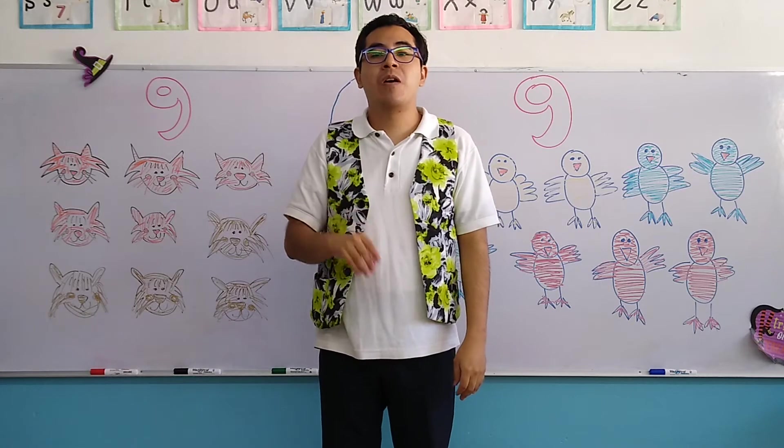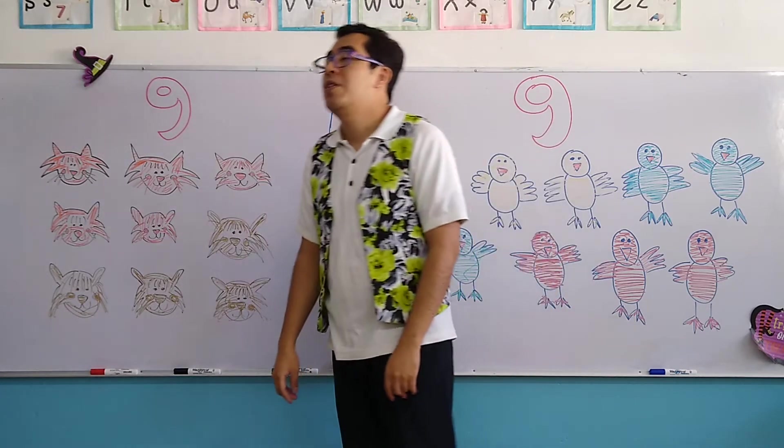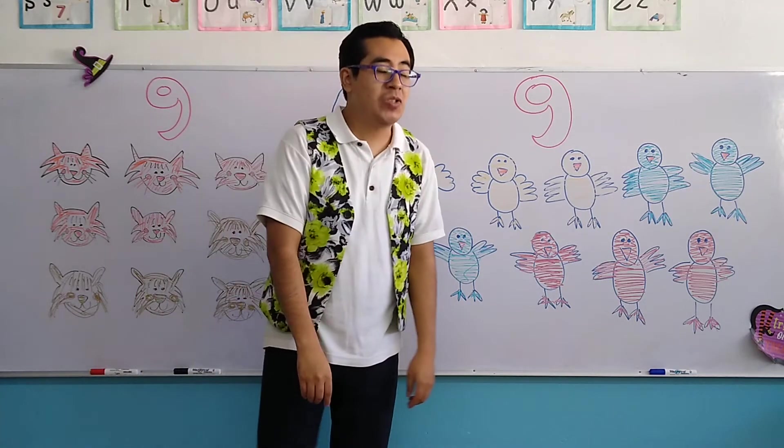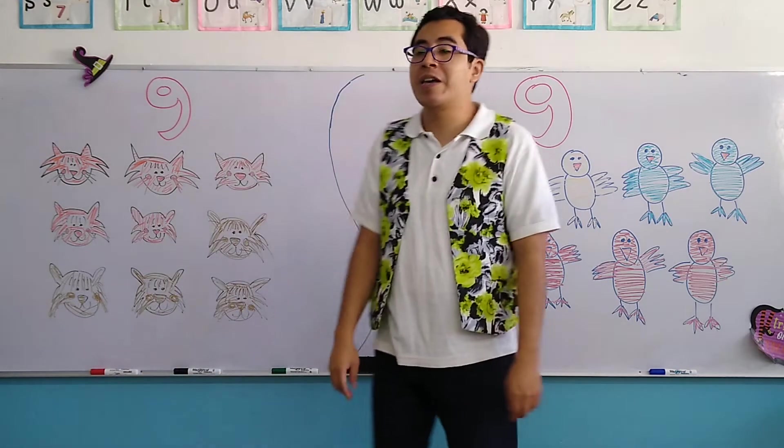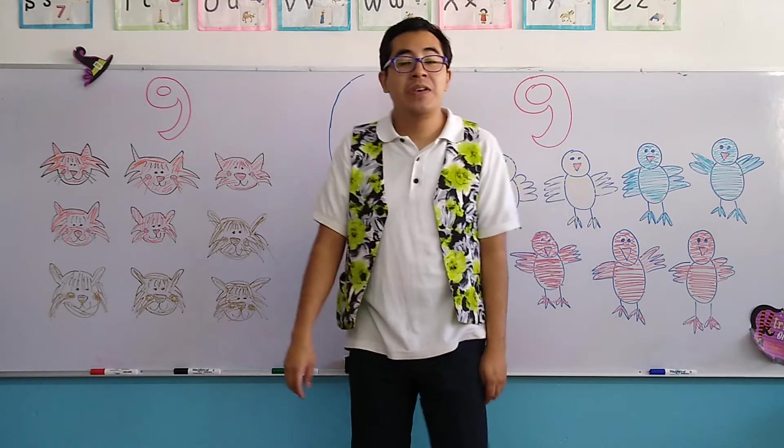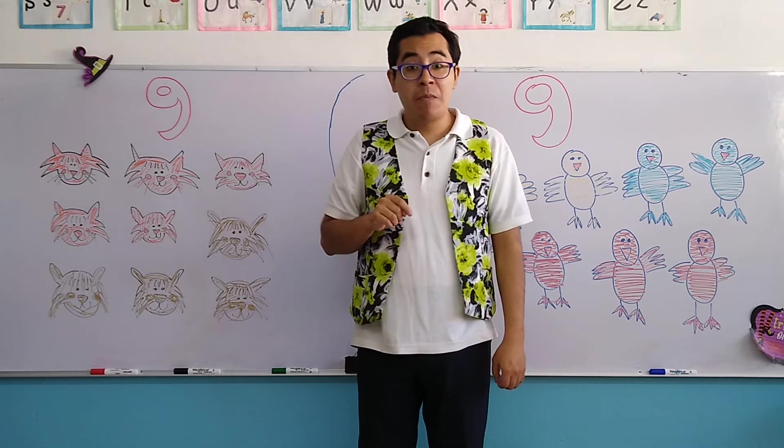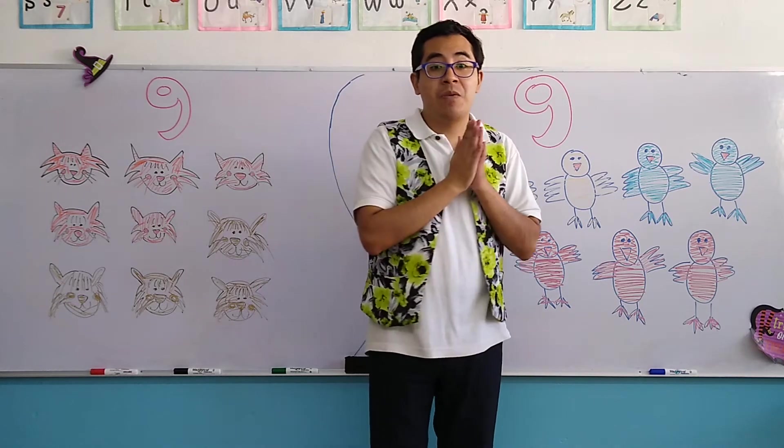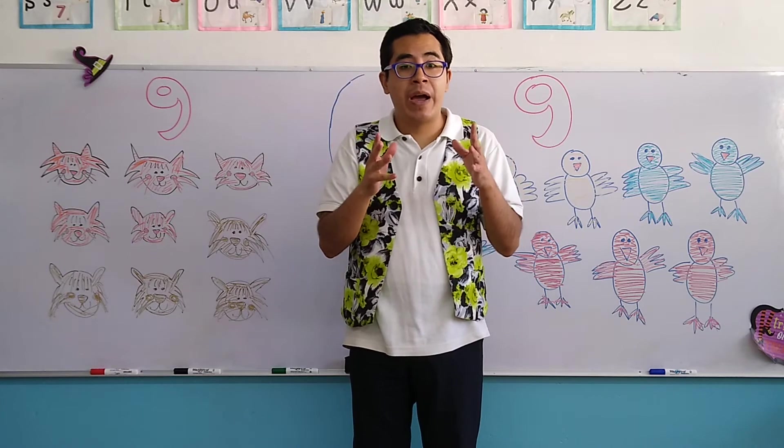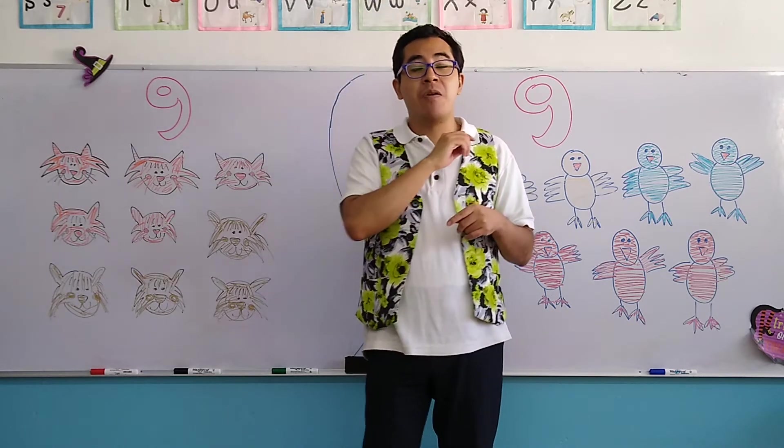Number 7 is the number that is always sleepy. It's always lazy. So that's why it is inclined. Number 7 the number that likes to sleep. Number 8 is the number that looks like Olaf the snowman. Two circles, one up and one down.